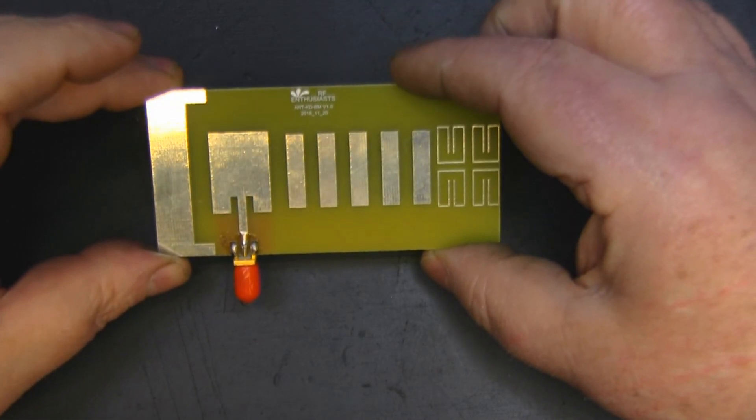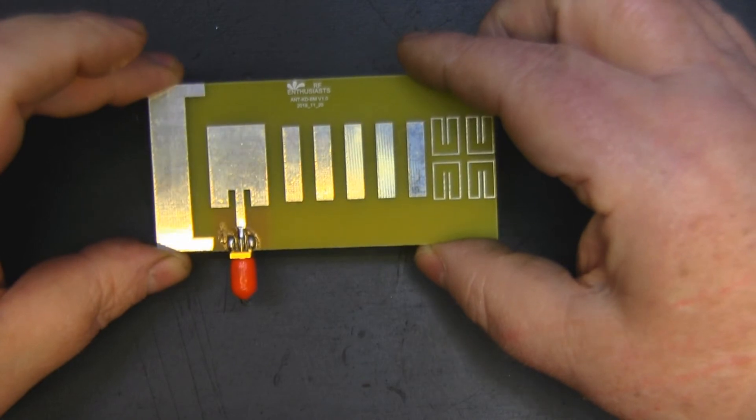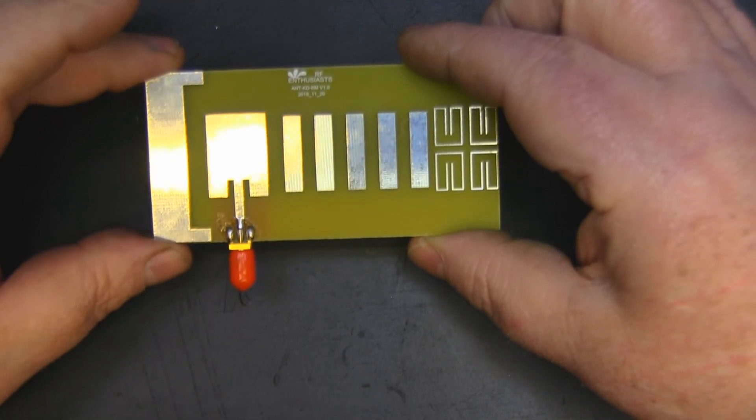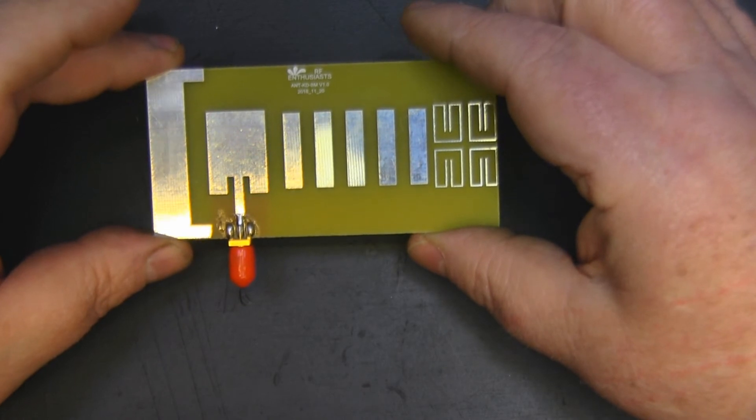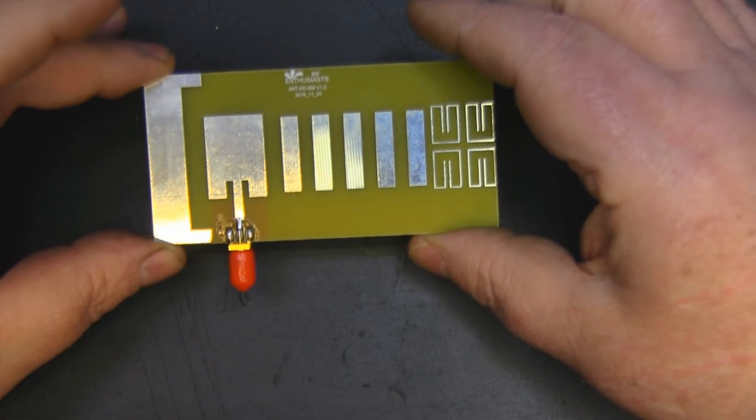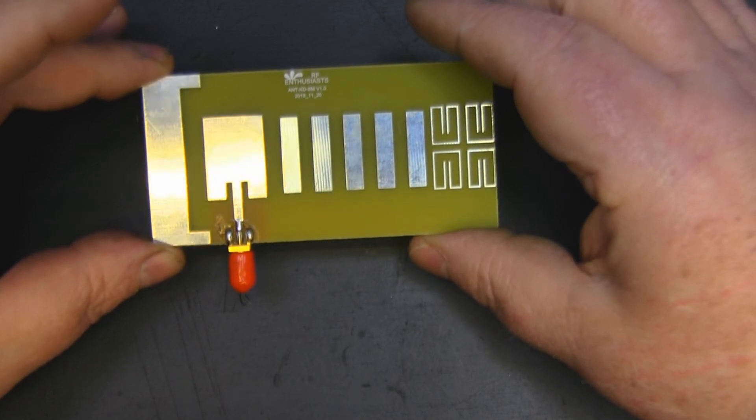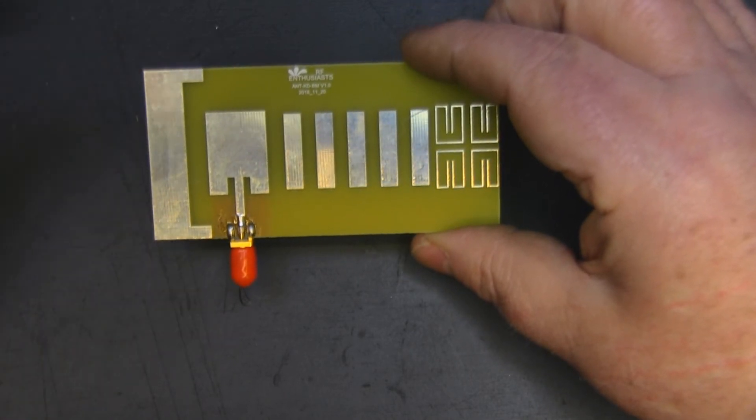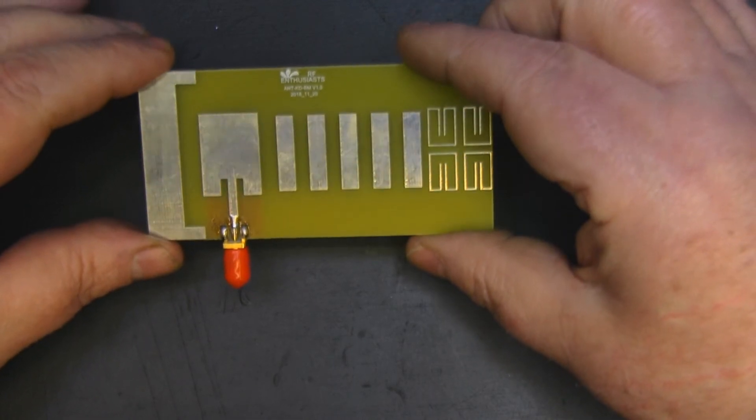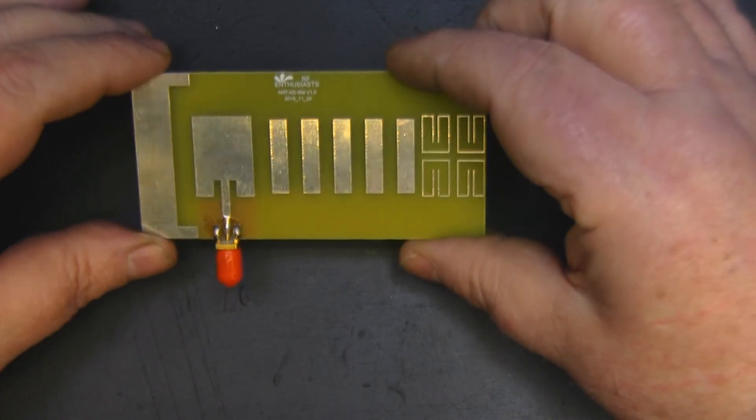Some designs work better inside a waveguide than others and I'm kind of thinking, well, I'm interested in what this particular design would work like inside a cantenna. From what we've learned in the past I think this would probably work really well inside a can, so that's another thing that I want to check out in future with this particular design.